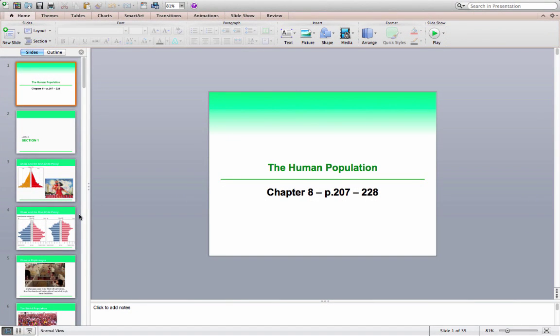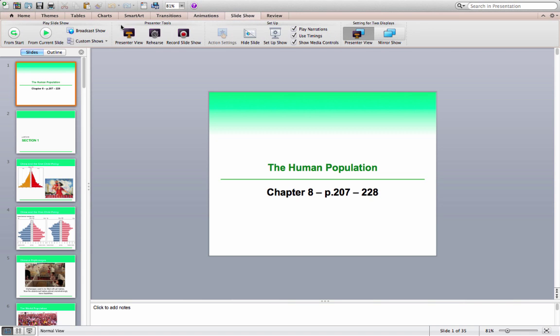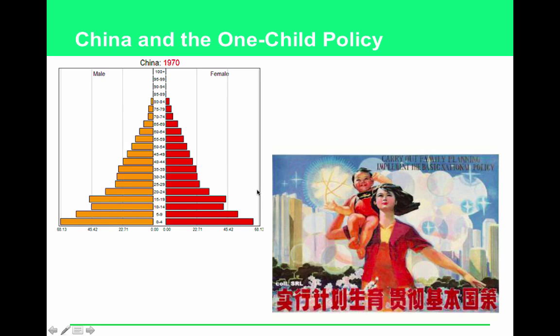Alright folks, here we are at the human population. It's my hope that at least some of you have had AP Human Geography or really any of the histories. Hopefully you talked about some of this stuff. We're going to be breezing through this next unit, which is chapters 8 and 14, in about four class periods. So definitely make sure that you absorb the highlights of all of this as we move forward. The good news is not a lot of new information in here that is going to be startling. Alright, here's section 1.